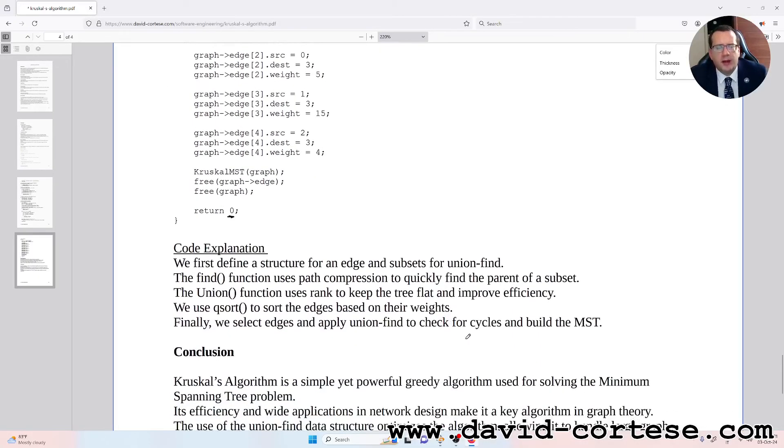So the code explanation. We first define a structure for an edge and subsets for union-find. The find function uses path compression to quickly find the parent of a subset.